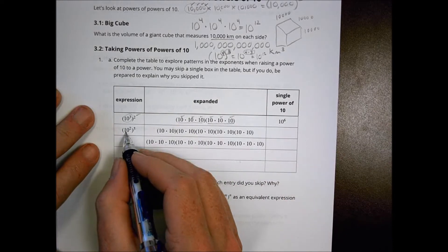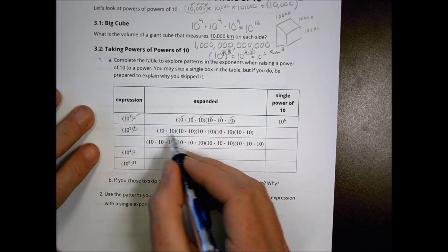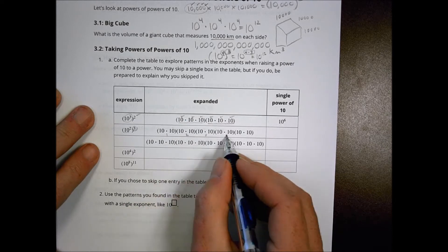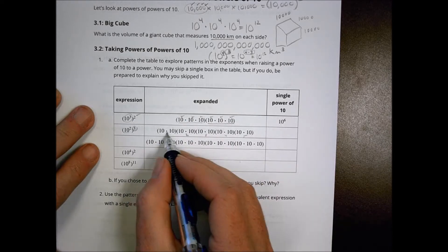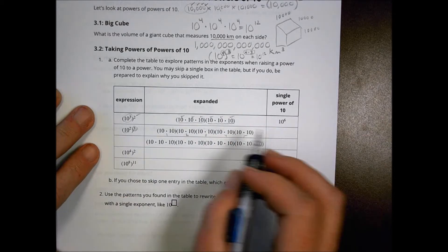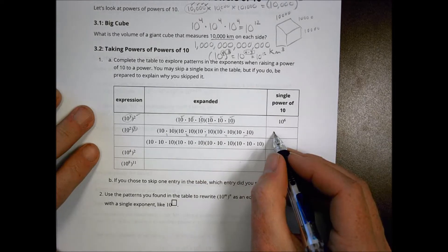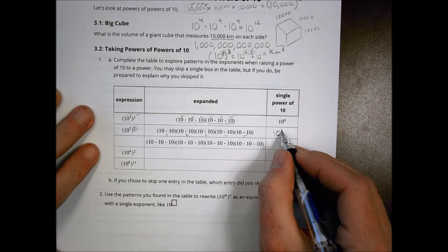In the second example, I have 10 squared and I do that five times. So here's group 1, group 2, group 3, group 4, group 5. I have five groups of 10 times 10. But in total, how many 10s do I have? 1, 2, 3, 4, 5, 6, 7, 8, 9, 10. So in total, I have 10 of those.